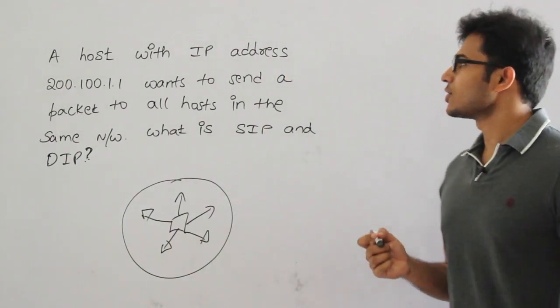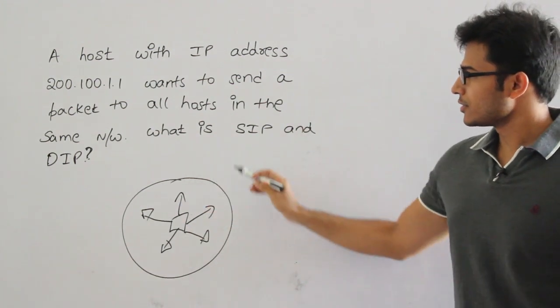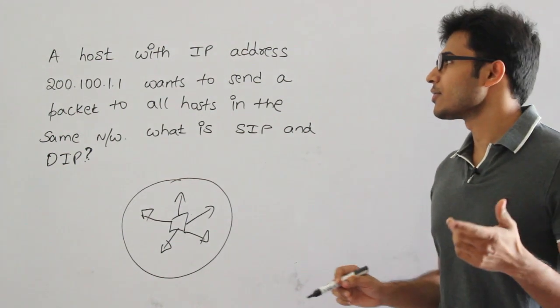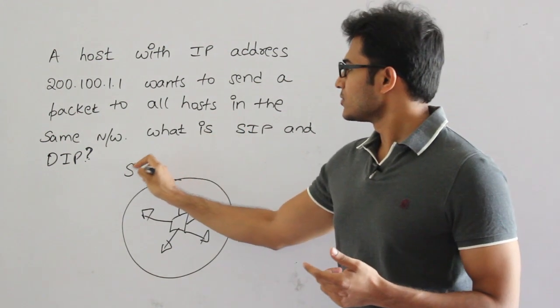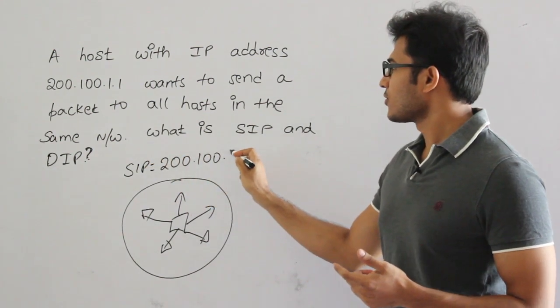So, coming to this question, how to solve it is, if this host wants to send a packet to everyone in the same network, obviously, source IP address is going to be 200.100.1.1. Source IP address is 200.100.1.1.